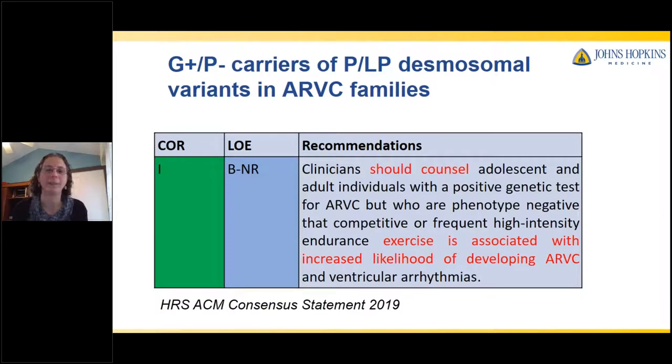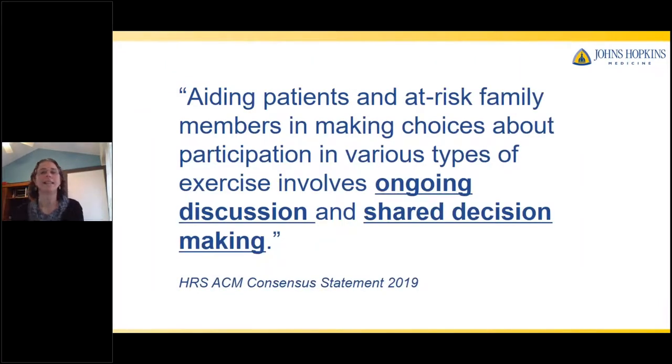All right. So what was our recommendation for family members? Here, again, it's a strong recommendation. It's a class one recommendation. But I'll call into your attention the nuances in the language. So here the recommendation was clinicians should counsel adolescent and adult individuals with a positive genetic test for ARVC, but who are phenotype negative that competitive or frequent high intensity endurance exercise is associated with an increased likelihood of developing ARVC and ventricular arrhythmias. And we really wanted to highlight that aiding patients and especially at risk family members and making choices about participation in various types of exercise involves ongoing discussion and shared decision making. For all of us who've sat down with patients and families and had these conversations, this is often not an event. This is often a process. And it's also as the phenotype changes over time, particularly for at risk family members. These are decisions that need to be revisited.